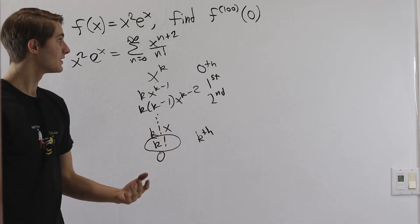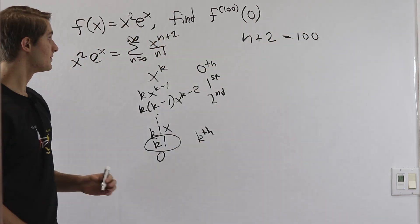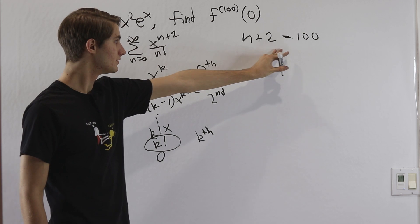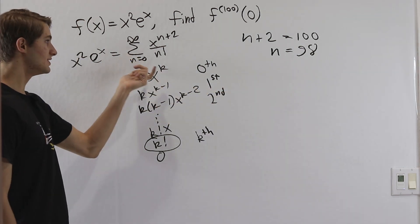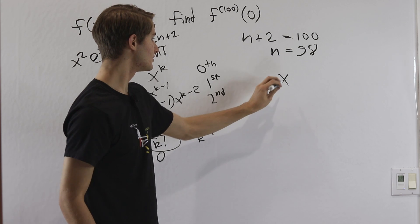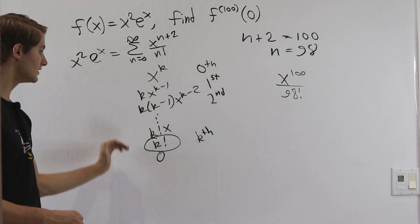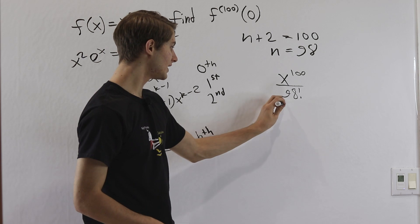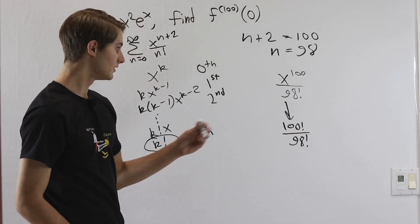The only term we care about is when the exponent equals exactly 100, because that's when differentiating 100 times gives us a constant. In our series the exponent is n plus 2, so we need n plus 2 equals 100, meaning n equals 98. The only term we care about is the n equals 98 term: x to the 100 divided by 98 factorial. After differentiating this 100 times, we get the constant 100 factorial divided by 98 factorial.